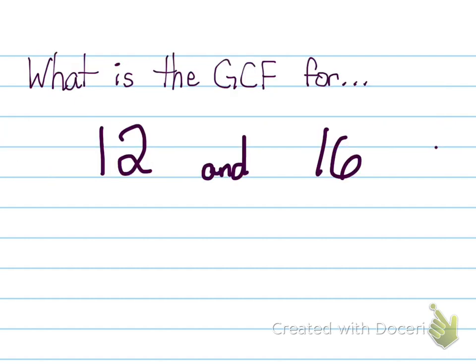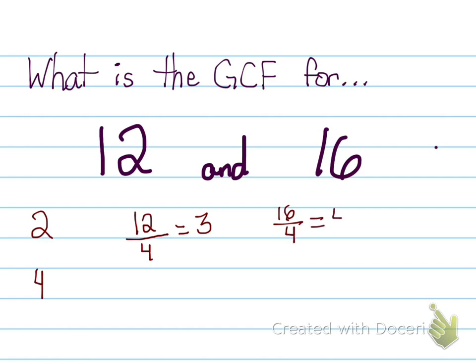Let's look at some examples. What is the GCF for 12 and 16? What are some numbers that can divide into 12 that can also divide into 16? Some numbers that might come to your head are two or four. Between two and four, which one is the largest? It's four. If I take 12 and divide it by four I get a whole number without a decimal, and if I take 16 and divide it by four I also get a whole number without a decimal. So therefore my GCF is four.